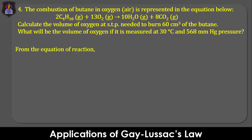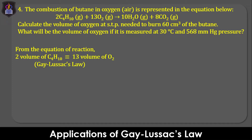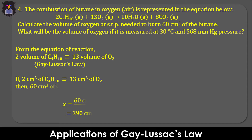From the equation of reaction, two volumes of butane burn completely in 13 volumes of oxygen. In other words, if 2 cm³ of butane require 13 cm³ of oxygen to burn completely, then 60 cm³ of butane will require 390 cm³ of oxygen at STP to burn completely.